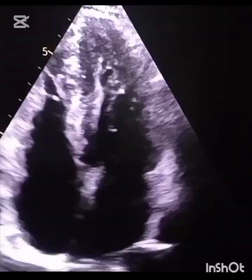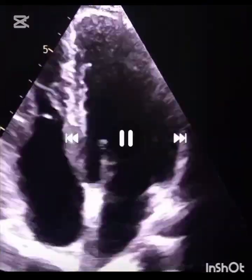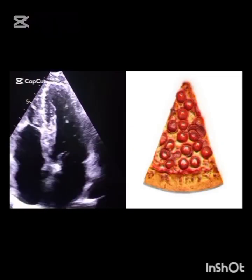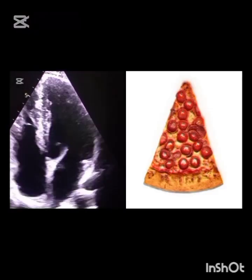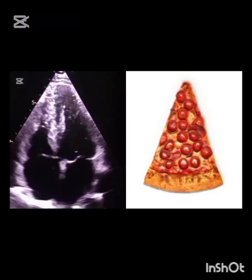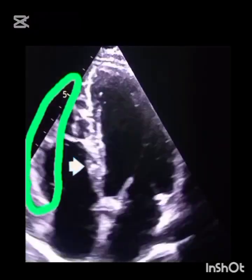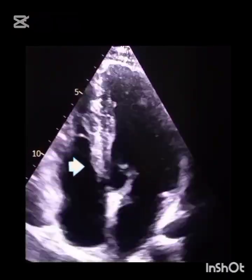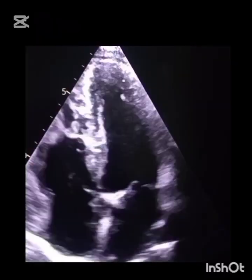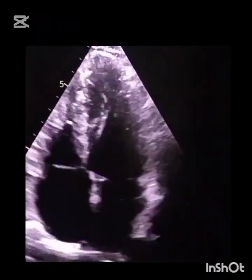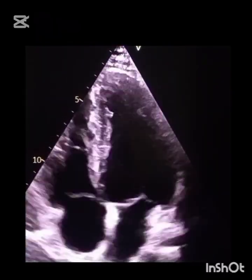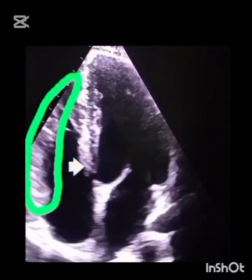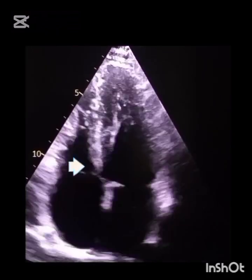We have some challenges of RV assessment. The right ventricle size and shape should be triangular, like a pizza slice as seen here. The tricuspid annulus should move upward toward the apex during systole and move back down during diastole. The free wall of the RV should contract toward the ventricular septum during systole and move away from the septum during diastole.